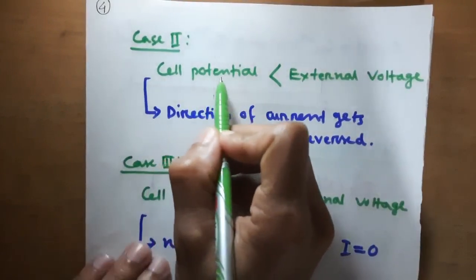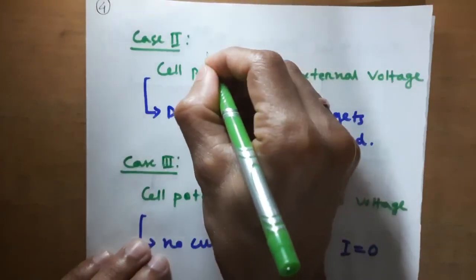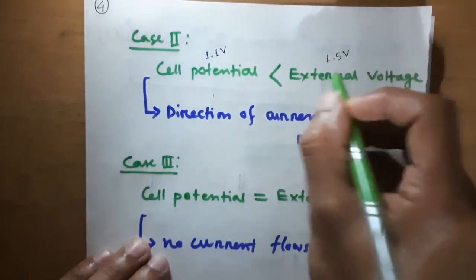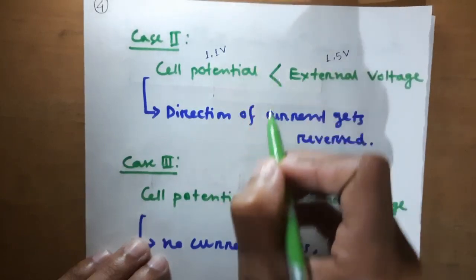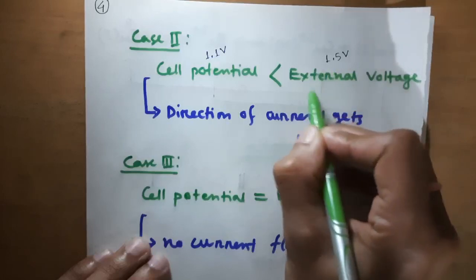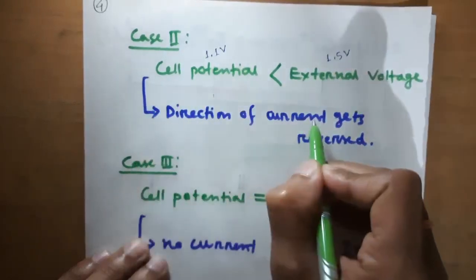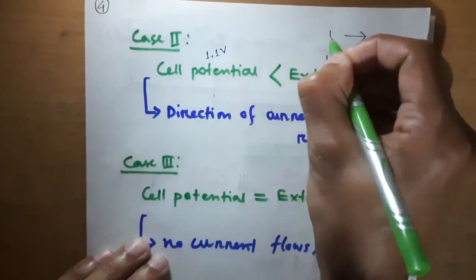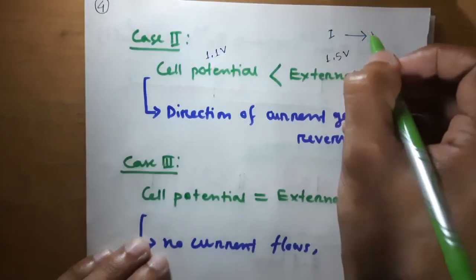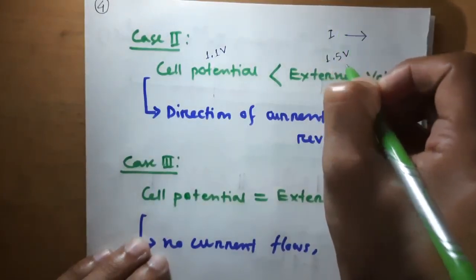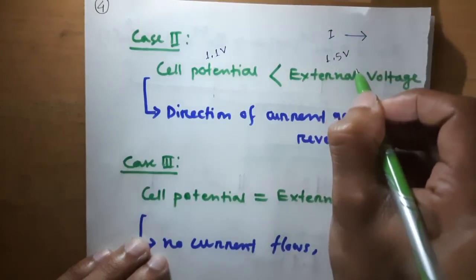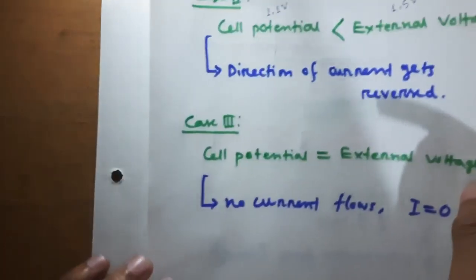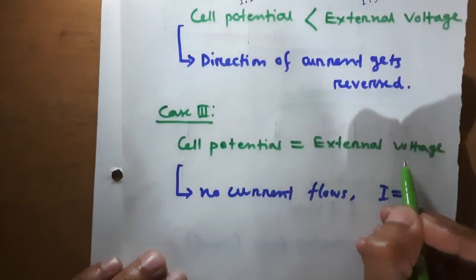Case 2: when cell potential is lower than the external voltage. The cell potential is 1.1 volts for the Daniel cell. Suppose the external voltage is 1.5 volts. Since the external voltage is higher than the cell potential, the direction of current gets reversed — from left to right, the opposite of the normal direction.